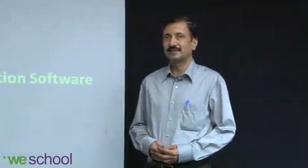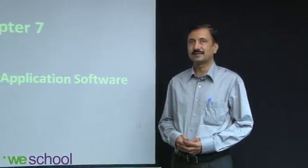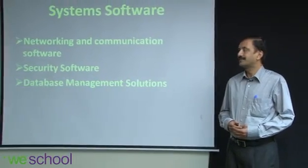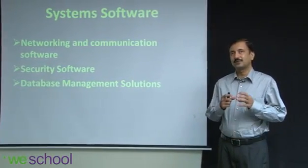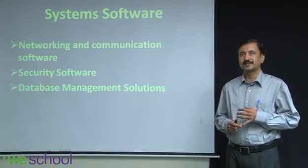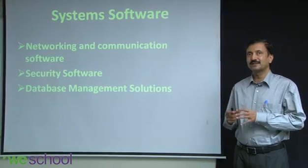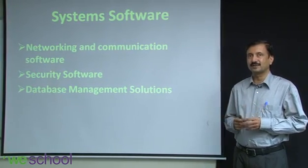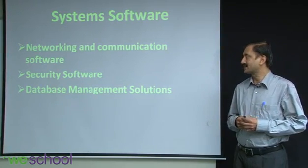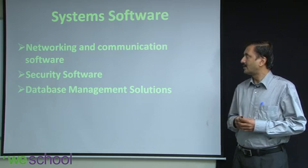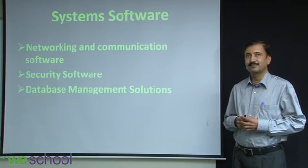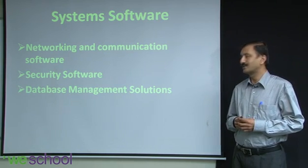Welcome to chapter 7, which is about other system software and applications. We have seen so far the core part of system software, which includes things like operating systems. Now there are a host of other things associated with system software. We will look at some of them and simultaneously look at some of the application aspects of the system — networking and communication software, security software, and database management solutions.